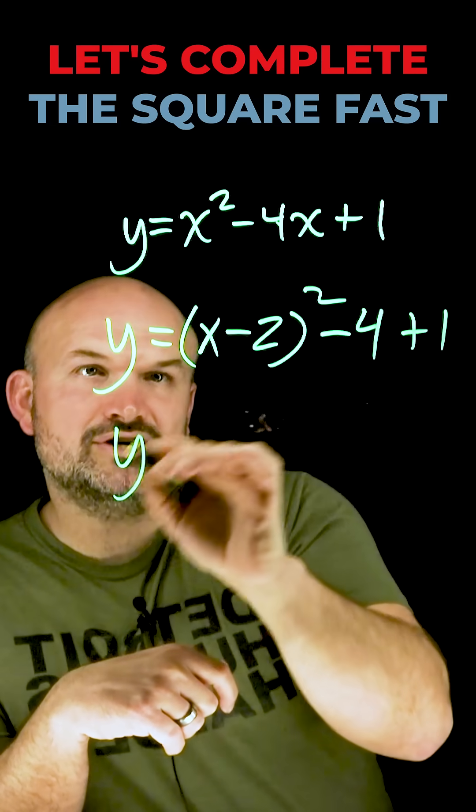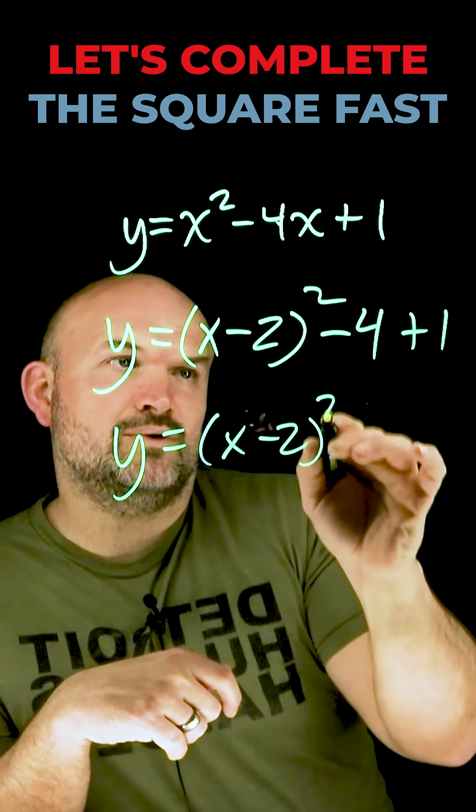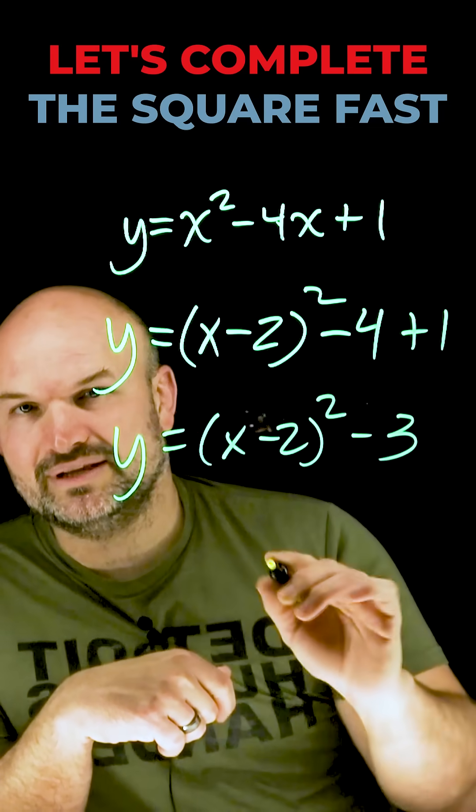Now I can just combine these terms. y equals x minus 2 quantity squared minus 3, and I've completed the square.